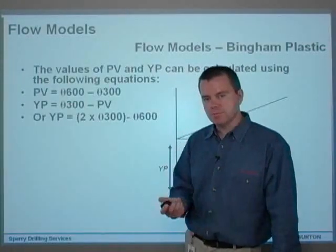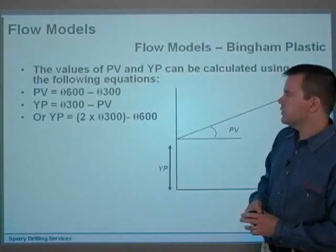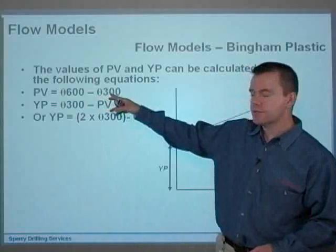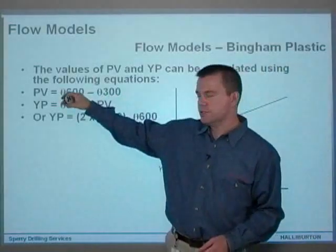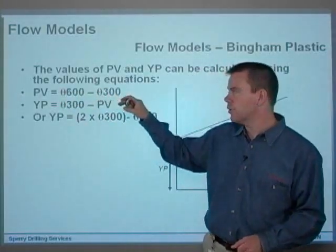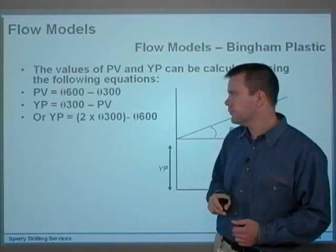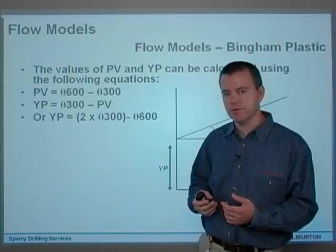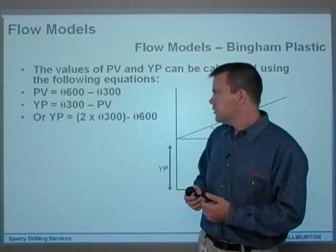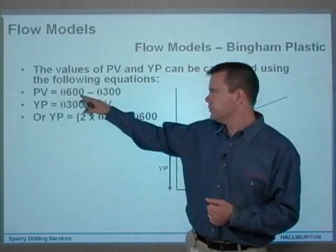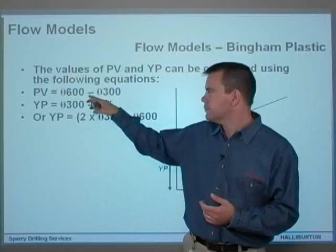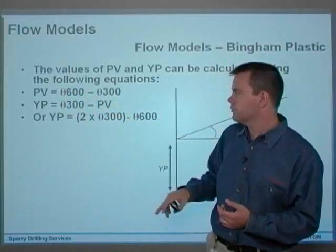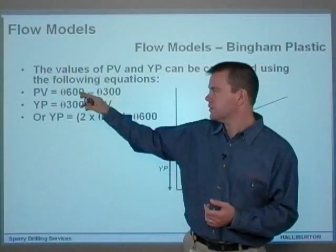The values of PV and YP can actually be calculated using the following equations. PV is the theta 600 minus the theta 300. Now these are your rotational speeds of your fan rheometer, as you saw Hector when Hector was demonstrating the fan viscometer, the rheological properties of the mud. He got a dial reading at 600 RPM, 300 RPM. So the PV is actually 600 minus 300.